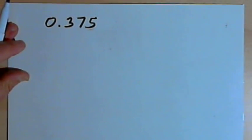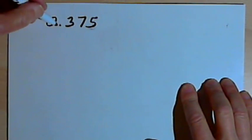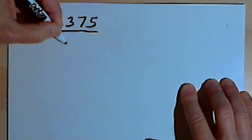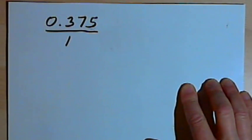Here's the example I want to work with. 0.375 is a terminating decimal, and I want to write that as a fraction. The first step I'm going to do is turn it into a fraction, or give it a denominator of 1.